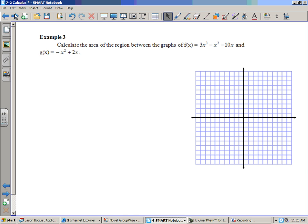Unfortunately, which function is on top changes in each region. So you're going to have to do two separate integrals on this one. So and then you just add those together, exactly. So why don't you go ahead and graph that. I'll have to write them over here. So we got 3x to the third minus x squared minus 10x, and the other one's negative x squared plus 2x. Let's go graph those and see what we get.